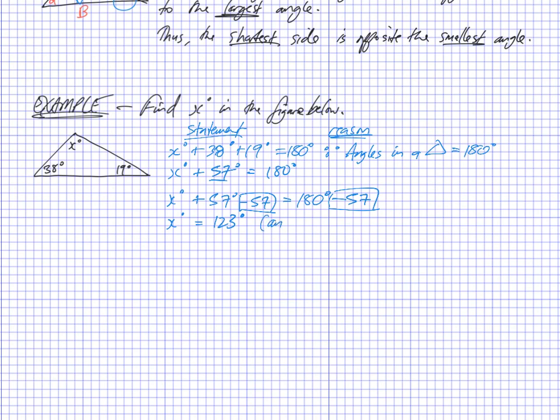So it's an obtuse angled triangle. Alright, so that's an example of using some triangle properties to find an unknown. Hopefully that helps you out. And see you in the next video.